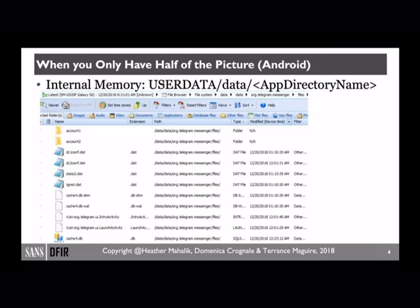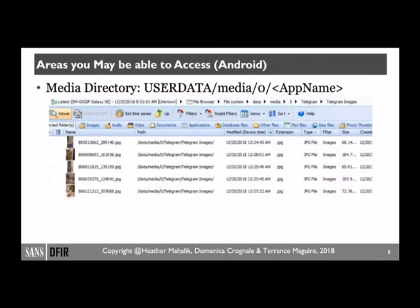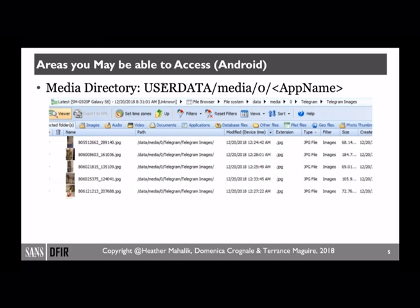Another area you're going to want to examine on Android devices is the media directory. The media directory is a location that you should always be able to access on your device — you can get there simply by plugging your Android into your desktop or laptop machine, and it should give you access to the media directory inherently. This particular screenshot is from the application Telegram. Telegram stored information of interest in the internal NAND flash as well as the media directory in a folder related to the application. So if we didn't get that area on the internal NAND flash, we could definitely get the data that was in the media directory.